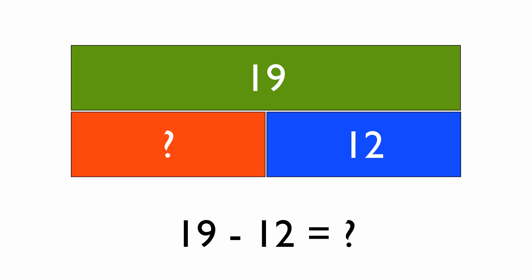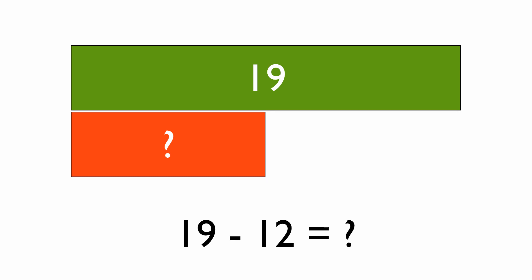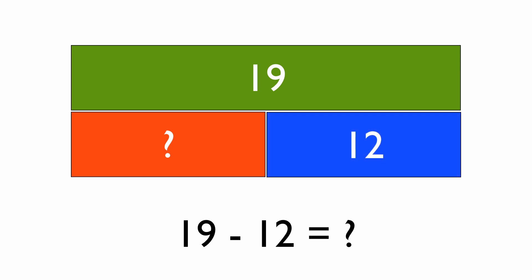As you can see, when we take away the 12, it leaves us with the red question mark. Now that we've got the question mark at the end of the number sentence, it's easy. 19 take away 12 equals 7.